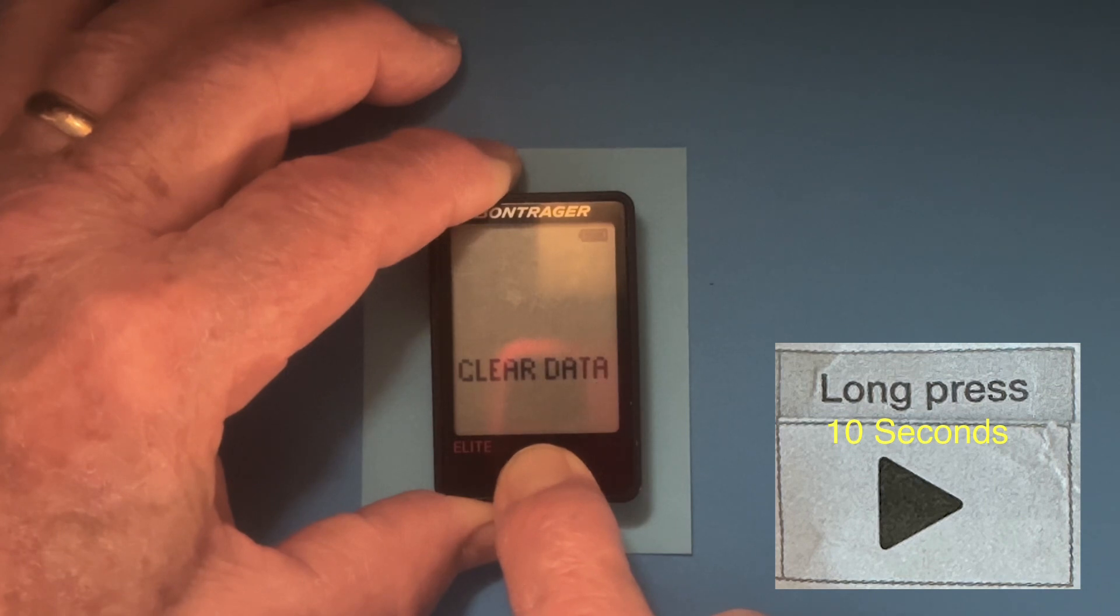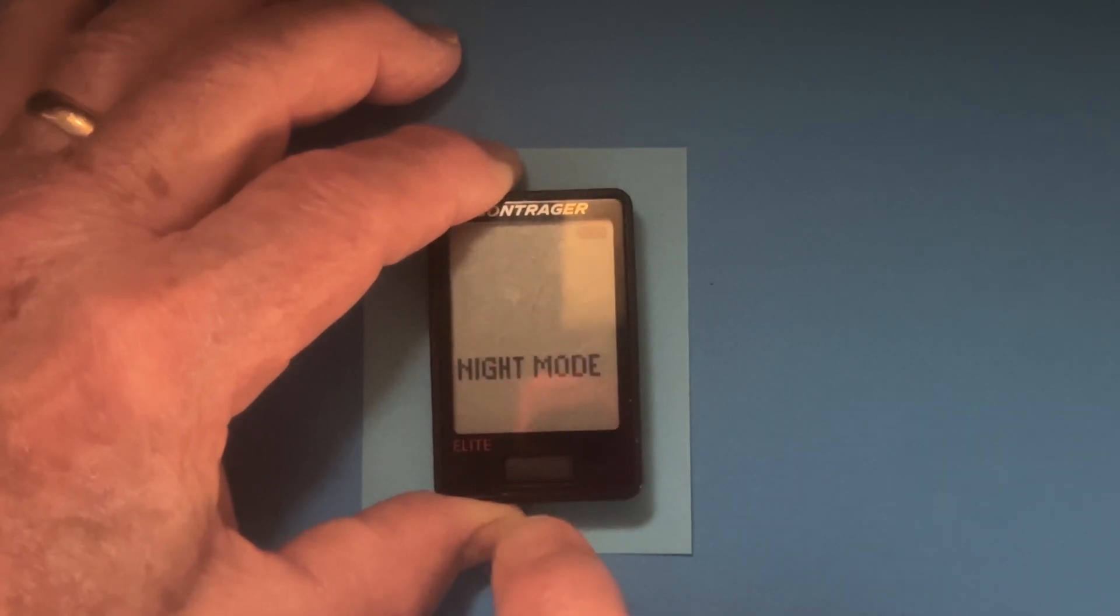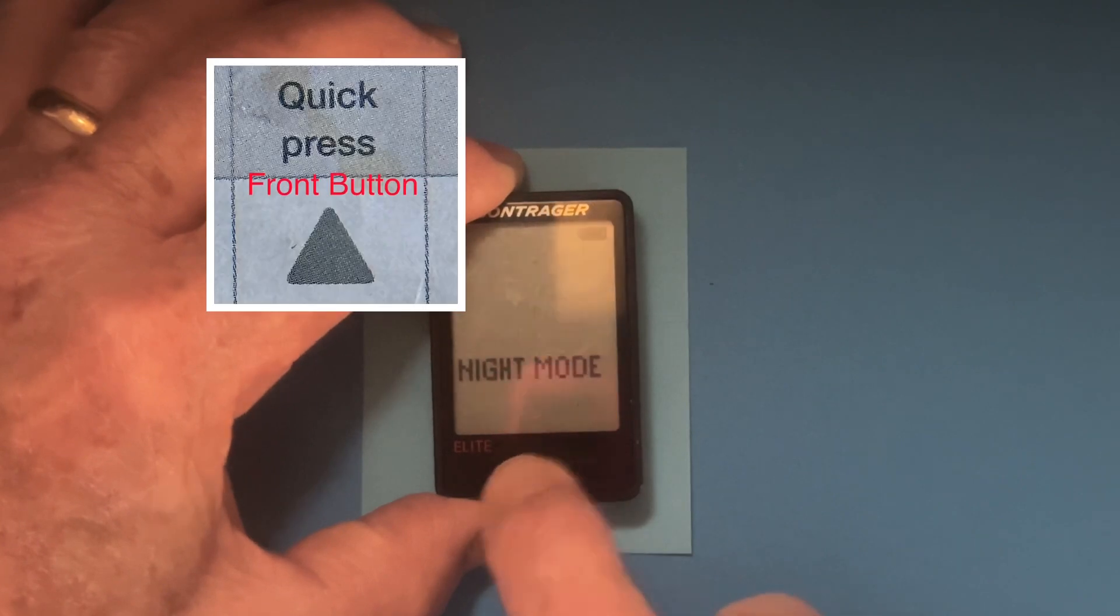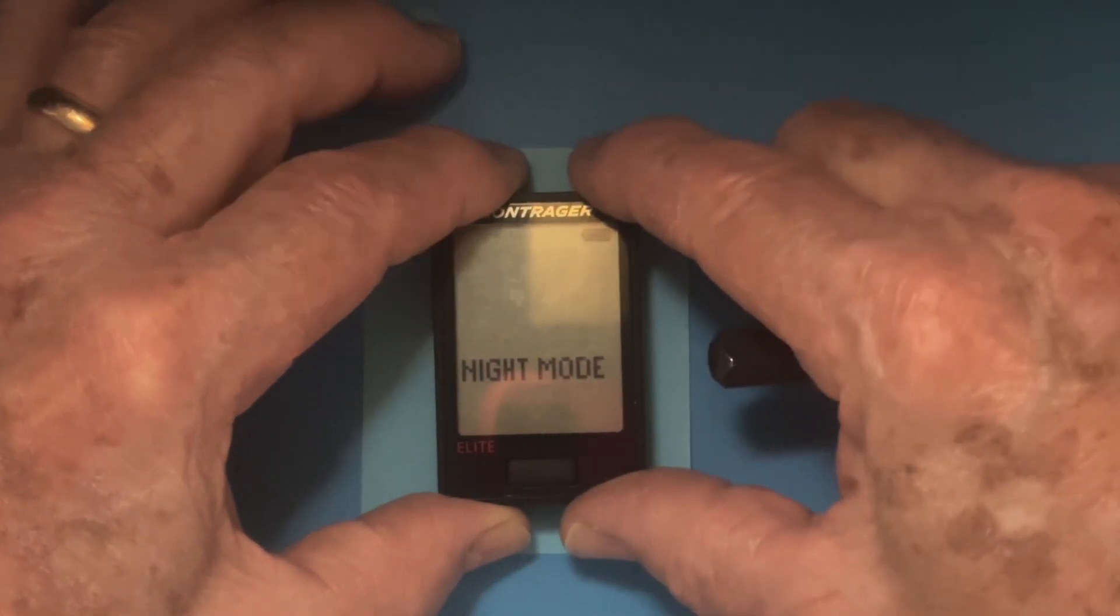What will happen is you'll see it's green. Just ignore that. And when it goes to night mode, it says night mode, no. Press the front button again and it'll say night mode, yes.